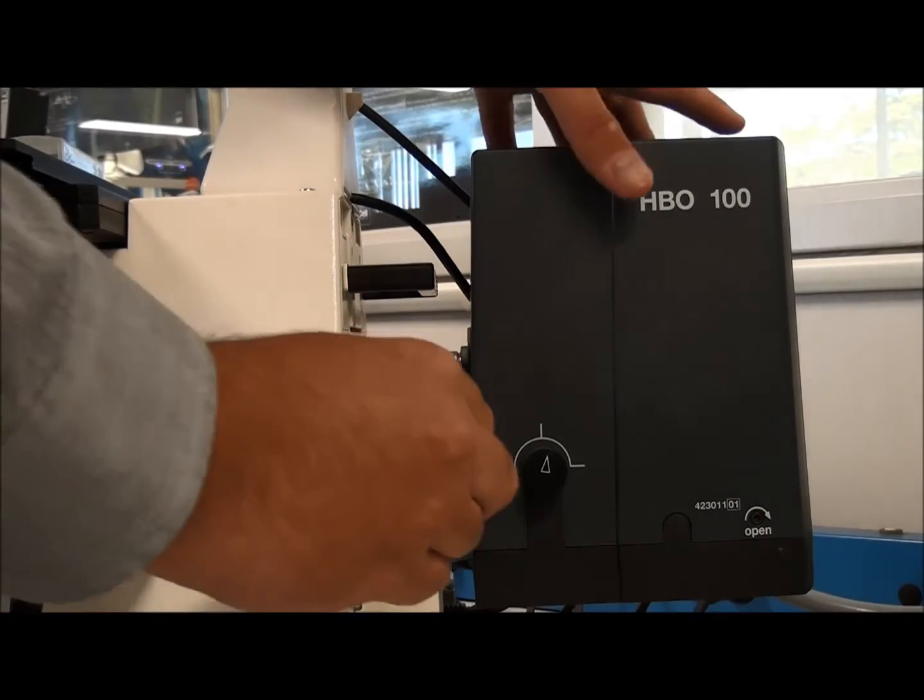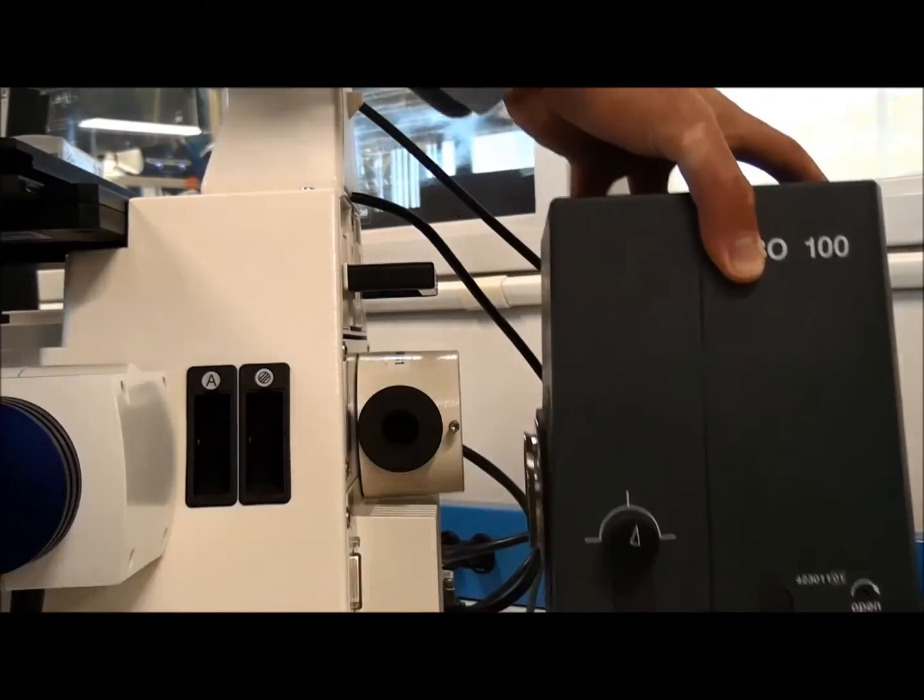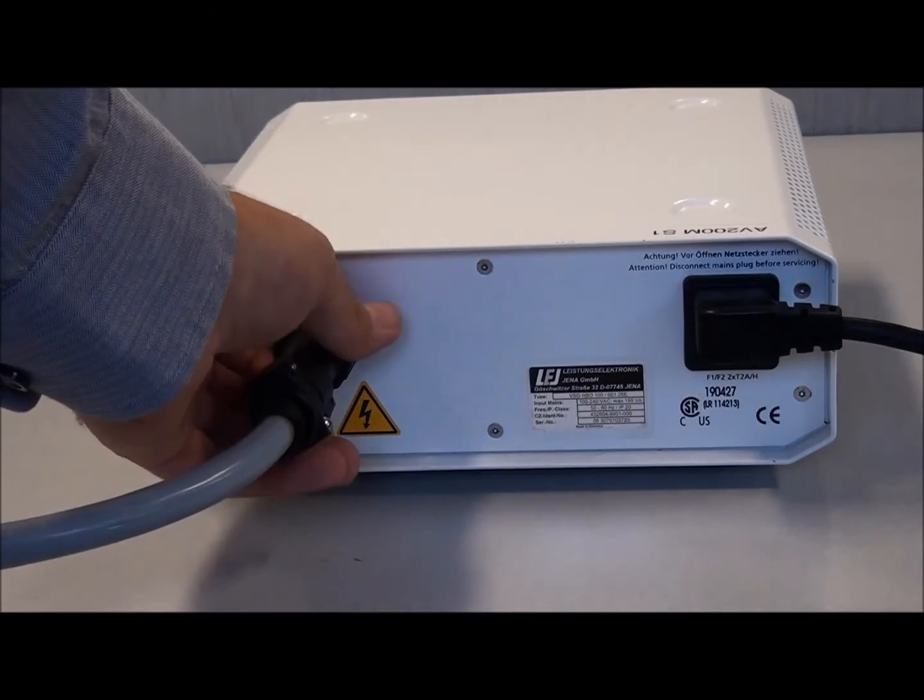Removing the lamp housing from the microscope is not necessary, but can make the process easier. Disconnect the power cable from the HBO control box.